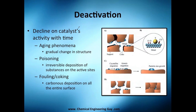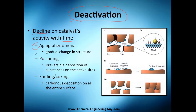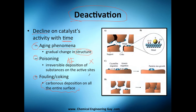Let me give you an important topic: the deactivation of our catalyst, which is essentially the decline in catalyst activity with time. As time passes, our catalyst is going to convert less, and more time is required for that reaction. This is due to three things: the aging phenomena, which is due to changing structure; poisoning, which is the irreversible deposition of substances on active sites; and fouling or coking, which is essentially having carbonaceous depositions on all the surface — as I would say, the catalyst is getting dirty.